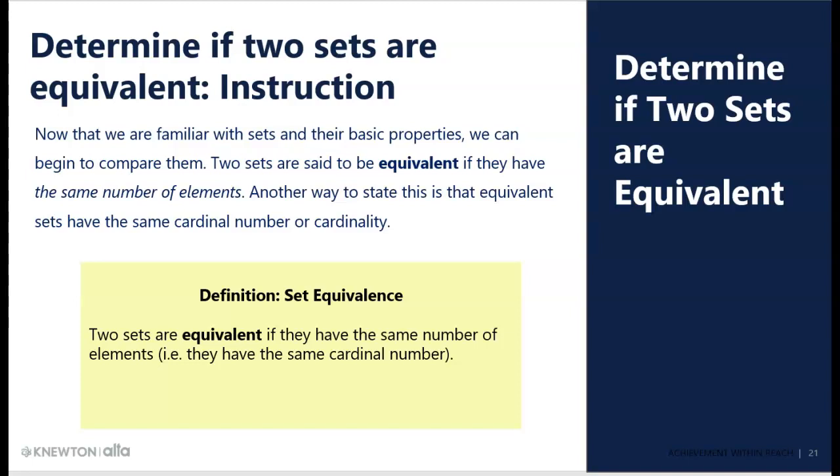Now, to determine if two sets are equivalent, it is actually really straightforward. Equivalent talks about the size of the set. This talks about how big the set is, how many elements are there. And in the last video, we saw that the cardinality of a set was how many elements there are. So we're going to talk about two sets being equivalent if their cardinality is the same. They have the same number of elements. It doesn't matter at all what those elements are. If a set has three elements and another set has three elements, then they are equivalent.